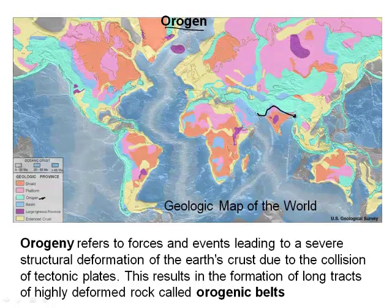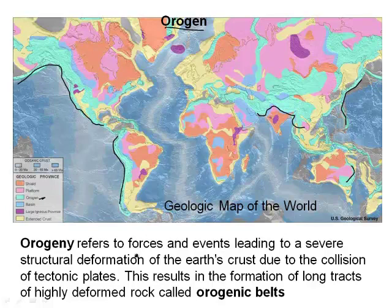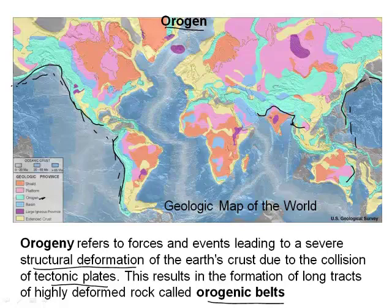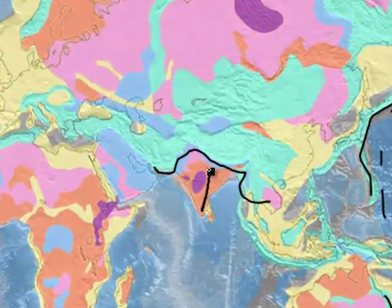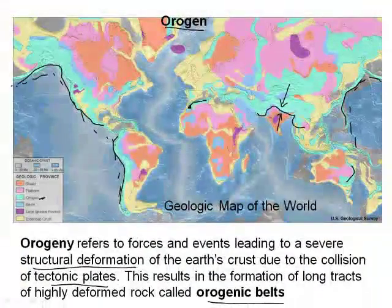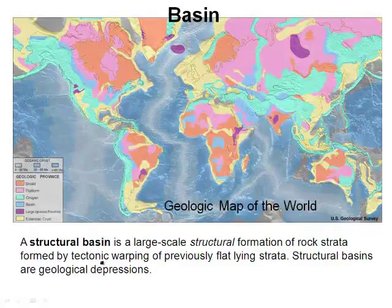Let's talk about the orogen. The orogen is shown in a bluish color on the map. If you notice where the bluish color is, it tends to be on the edges of continents, at the edges of tectonic plates — where all the earthquakes, volcanoes, and that kind of activity takes place. These have severe structural deformation of the Earth's crust due to the collision of tectonic plates, and are called orogenic belts. This includes the Ring of Fire over here, and right here is where India collided with Eurasia, causing all the deformation in that region.